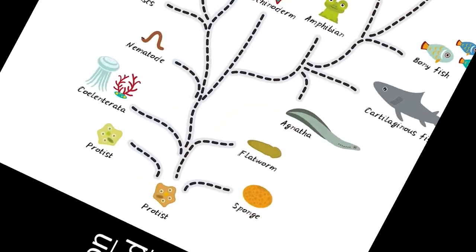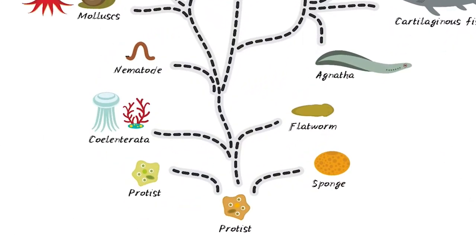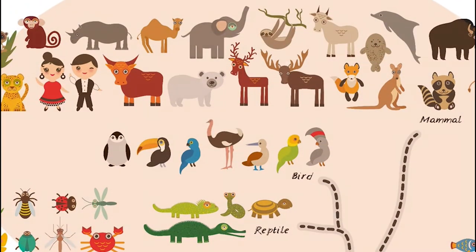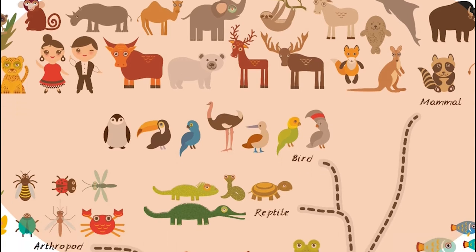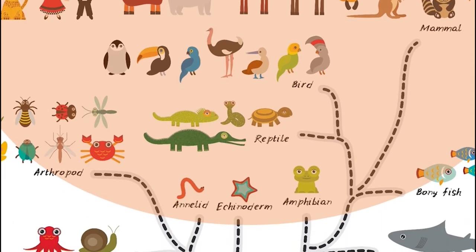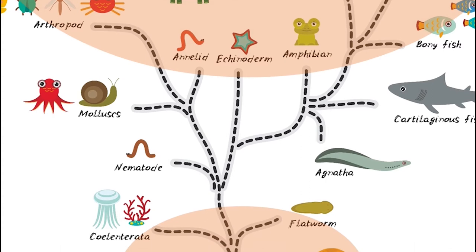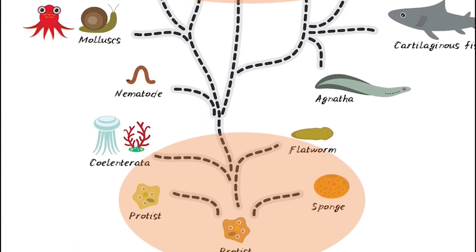The fallacy that many people believe about evolution is that organisms at the bottom of the tree of life are less evolved than organisms at the top of the tree of life. While some forms of life are more complex than other forms, all of the organisms alive today have been evolving for the same amount of time. The endosymbiotic theory looks at the very beginning of this journey, when the first cells were starting to change due to the pressures of natural selection.